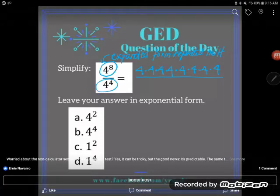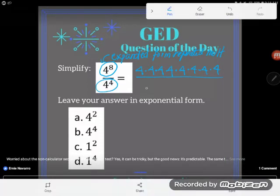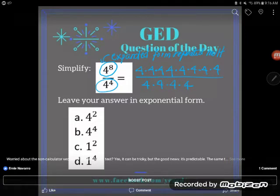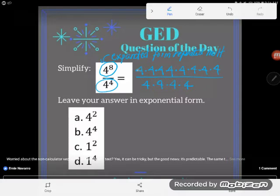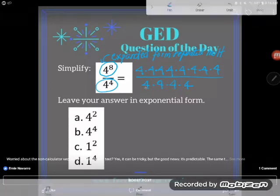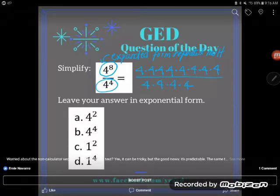Same thing with 4 to the fourth power. What does that mean? It means the number 4, multiplying by itself four times. And because I like to make a fool out of myself on Facebook by having wrong answers, I'm just going to count my fours up here. So up top I have 1, 2, 3, 4, 5, 6, 7, 8. Perfect. And down below I have 1, 2, 3, 4. Perfect.